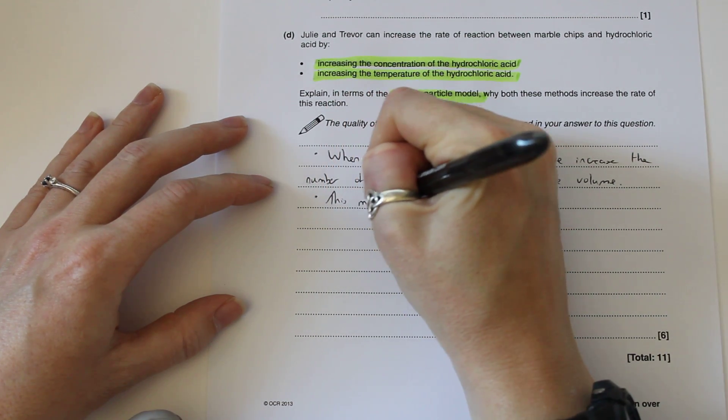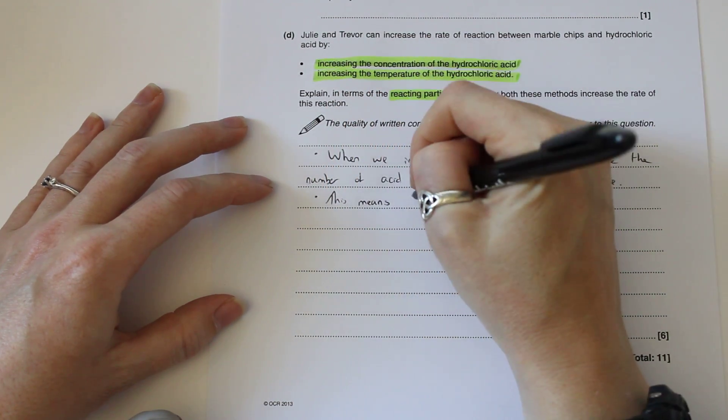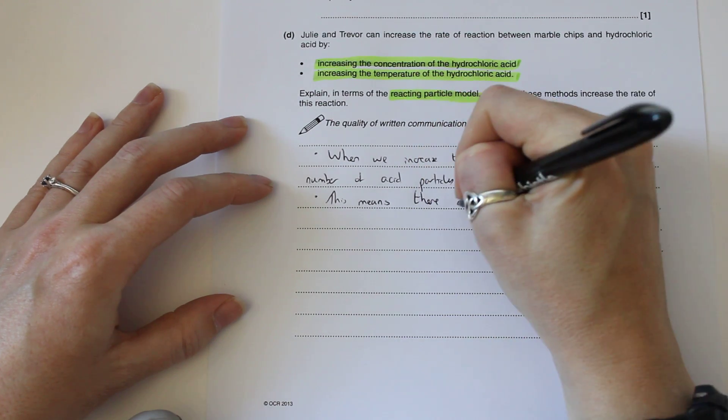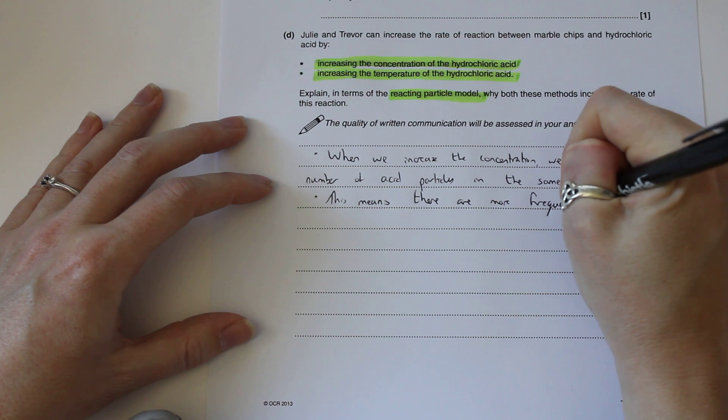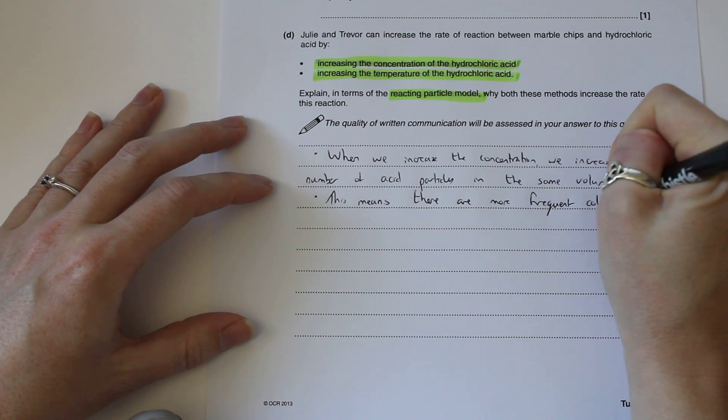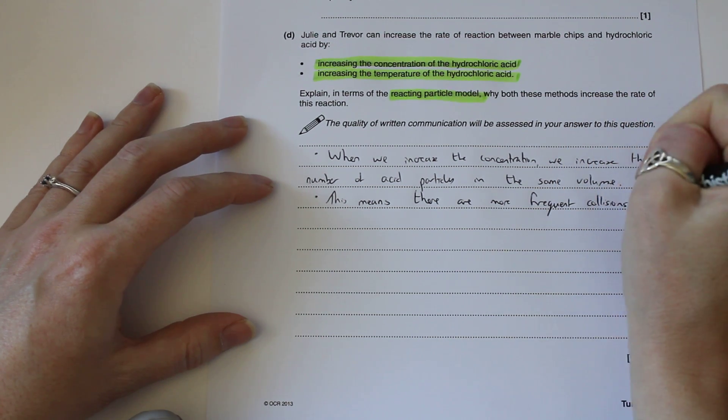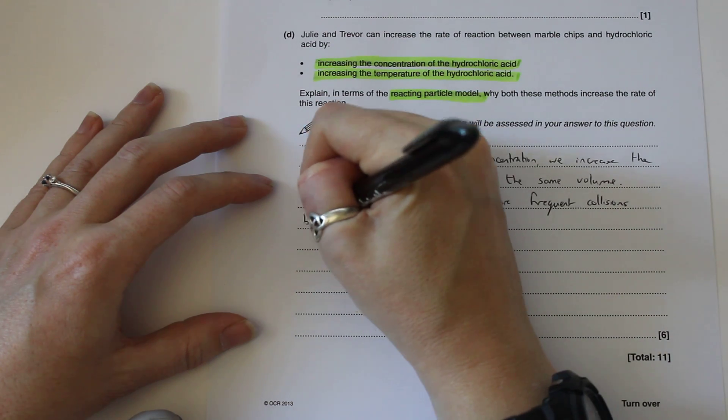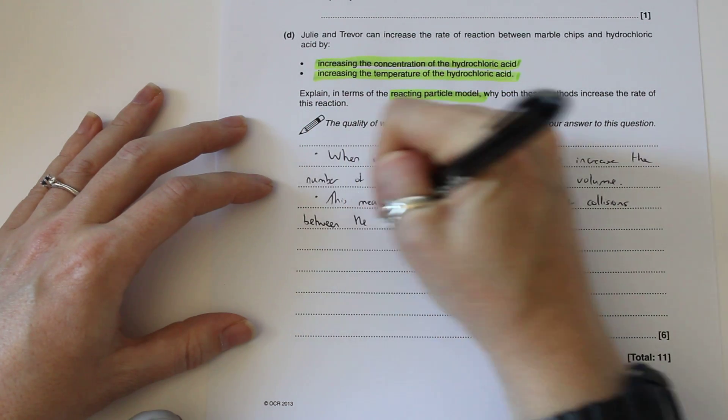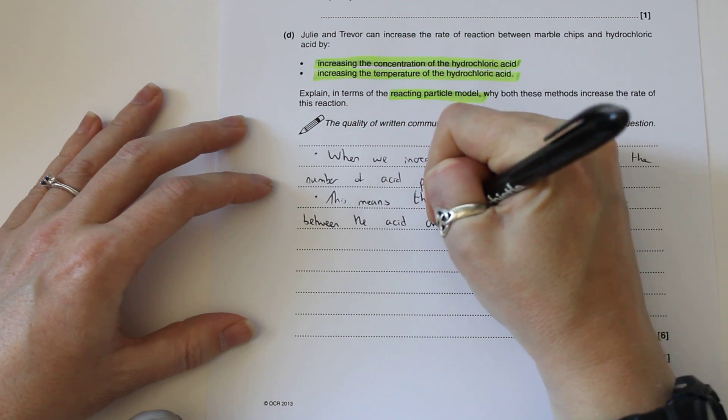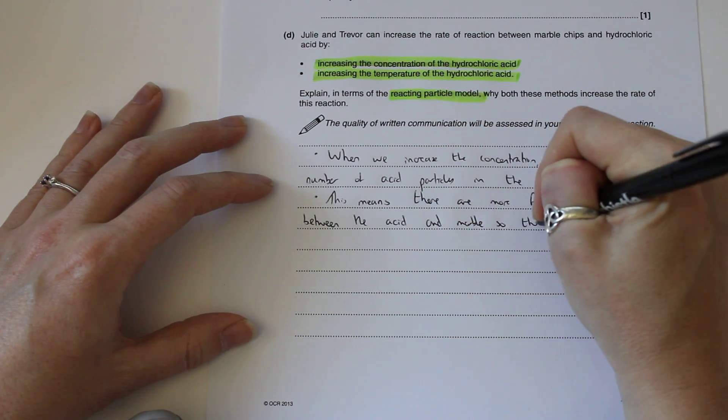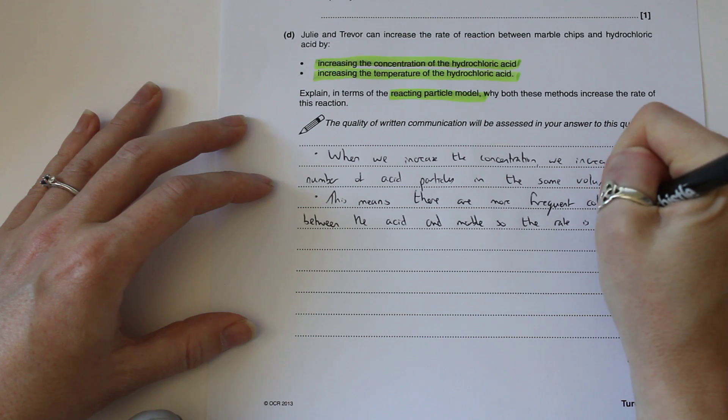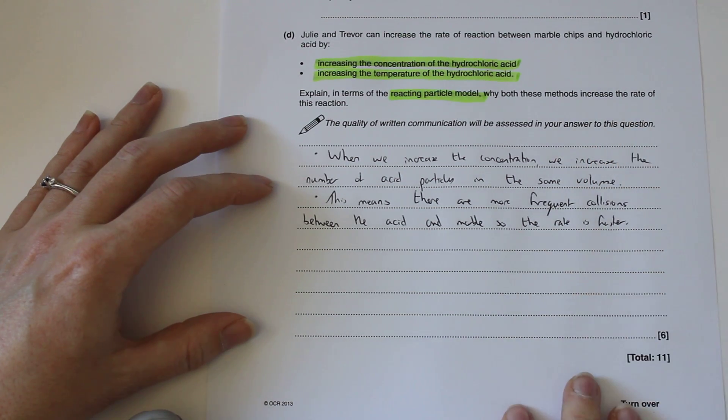Once we've got that, we just need to explain why that increases the rate. So this means there are more frequent collisions, and that's the phrase I always tell my groups to use. So it is talking about the fact that there are more frequent collisions between the acid and marble. So the rate is faster.